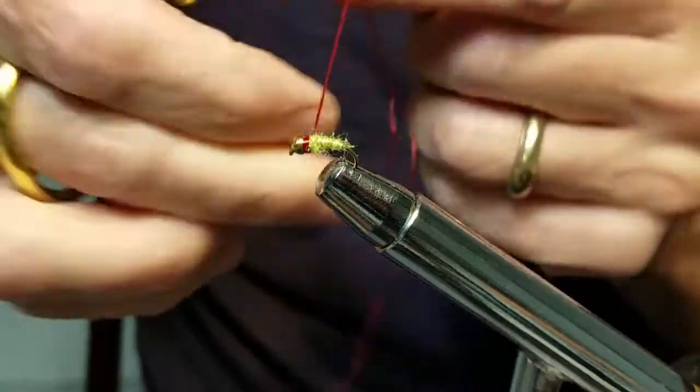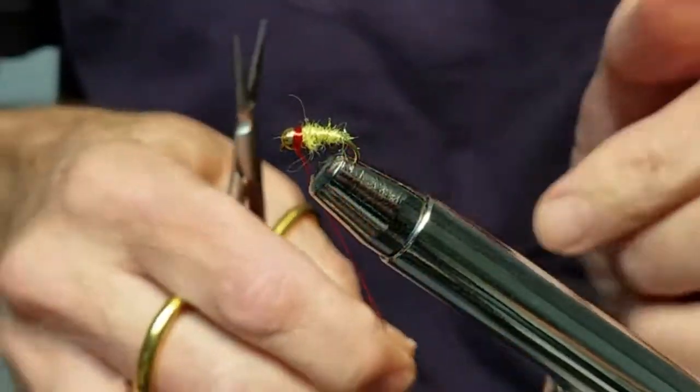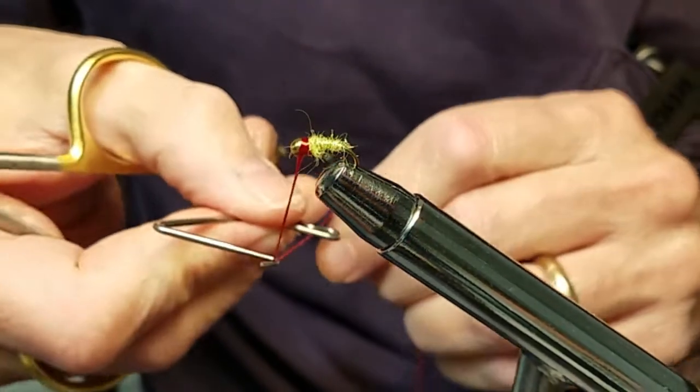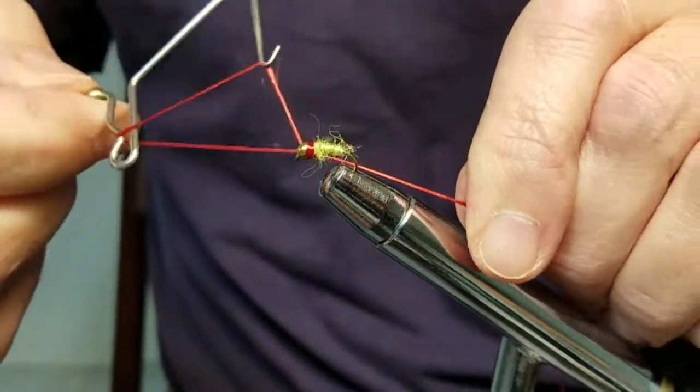I get the floss to a spot that's just smaller than the same size as the bead. Get my half hitch tool out.